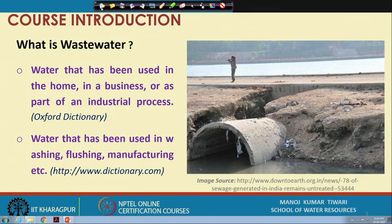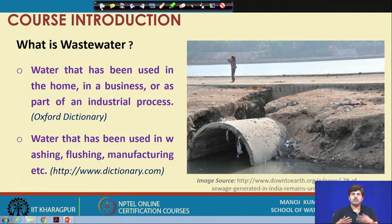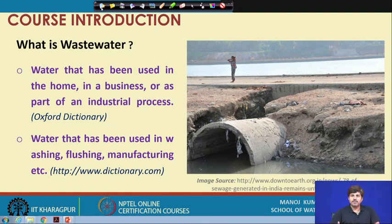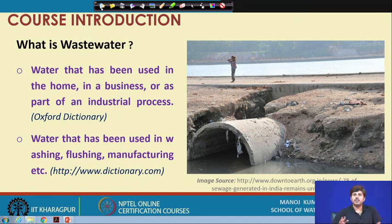We open the tap, get fresh water, wash our clothes in it, and then the water in which we have been washing our clothes we drain through our drainage system connecting to a sewerage system or for disposal. So the water which has been used for washing purpose becomes wastewater as it flows in the drain.